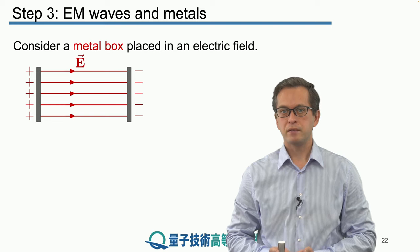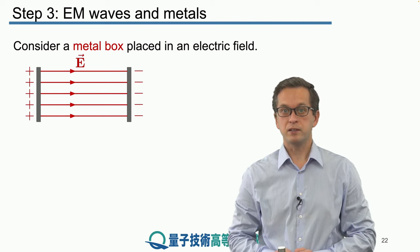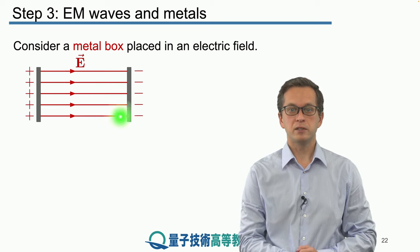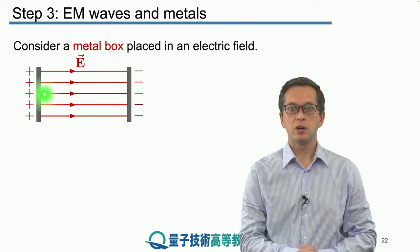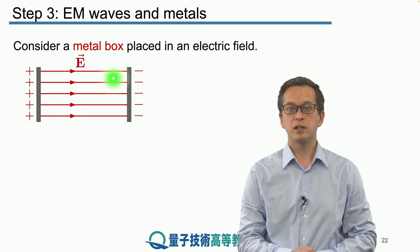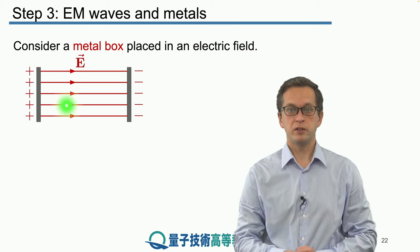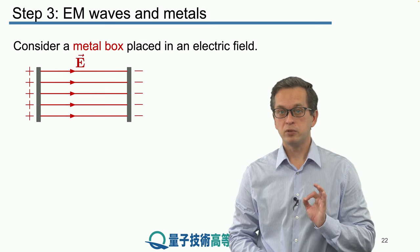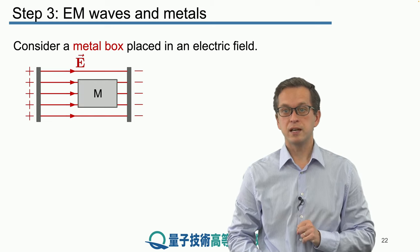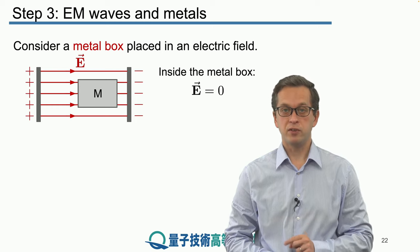One basic thing about metals is that there are no electric fields inside a metal. We can consider some electric field, particularly set up between two capacitor plates. So one plate is charged positively, one is charged negatively, and this sets up a nice uniform electric field. If we put a metal box inside this field and ask what's the field inside,